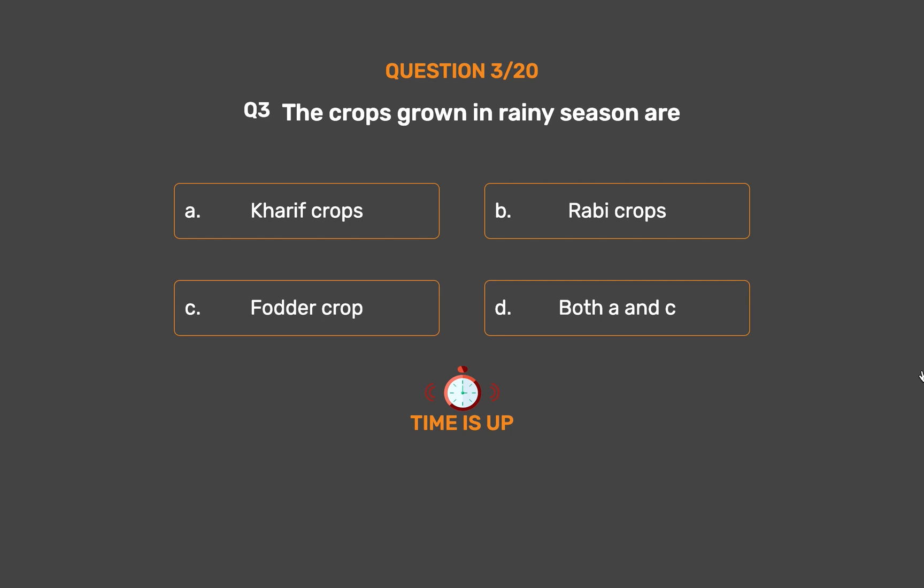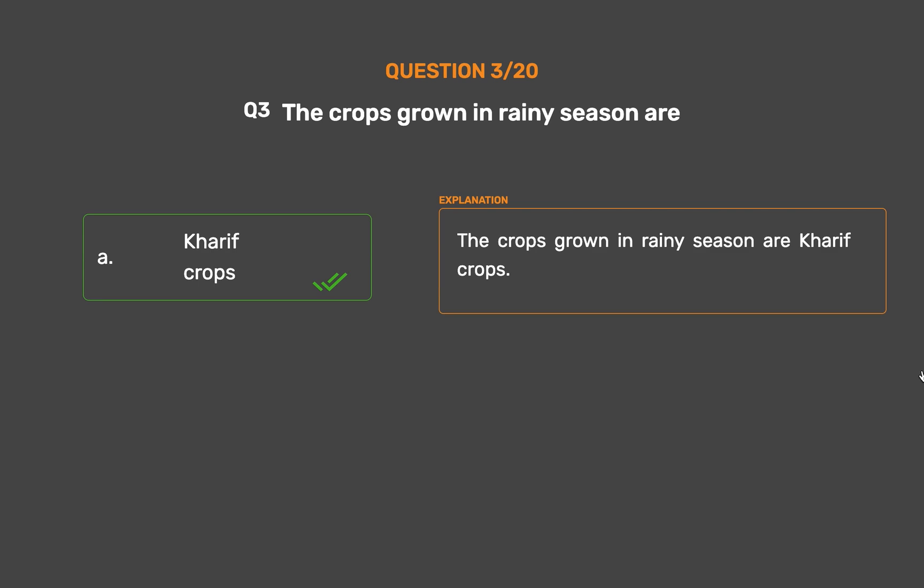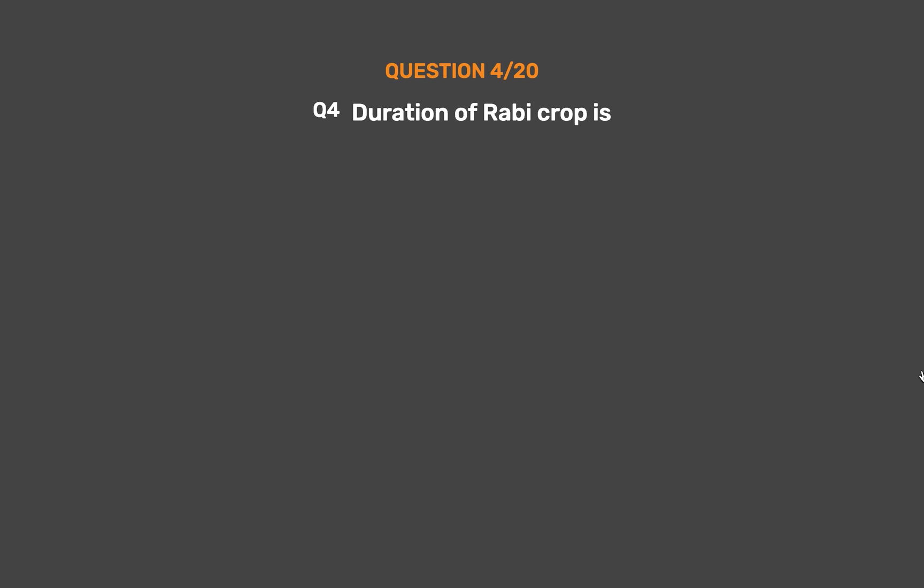The correct answer is Option A: Kharif crops. The crops grown in the rainy season are Kharif crops.